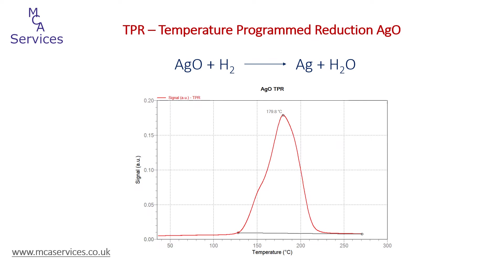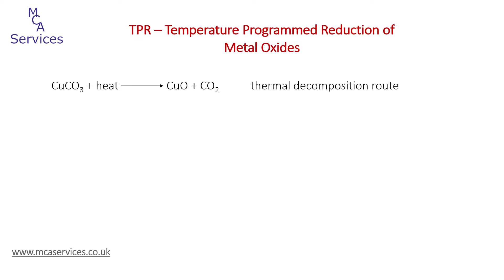Silver oxide is a good starting point when considering TPR because it gives a single well-defined peak, suggesting that reduction is straightforward and in a single step. To consider more complicated cases, we've made a range of metal oxides here at MCA Services. We could simply have heated a metal salt beyond its decomposition temperature — for example, copper carbonate is dehydrated and thermally decomposed in a single step at around 330°C — but we decided against this.